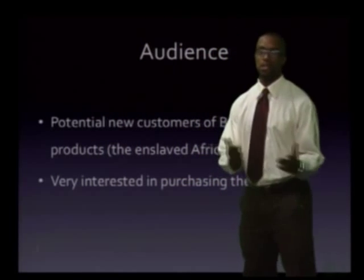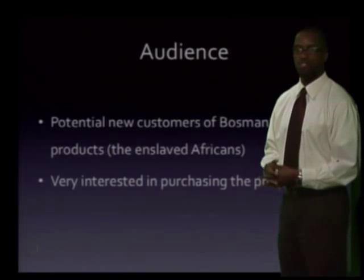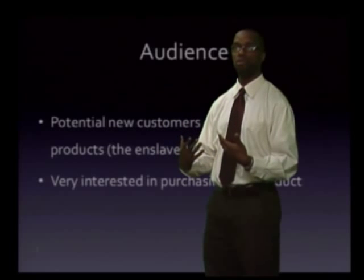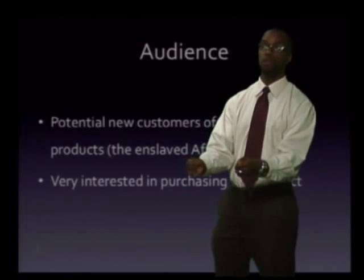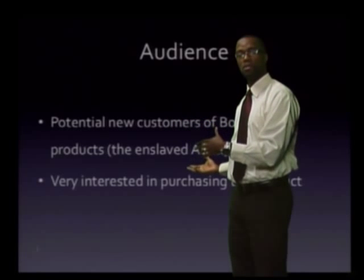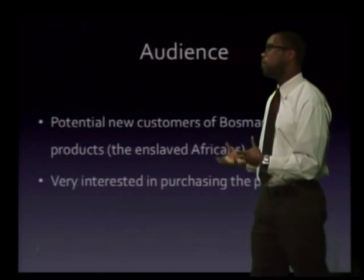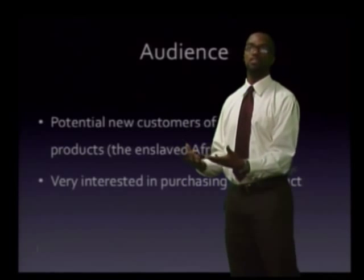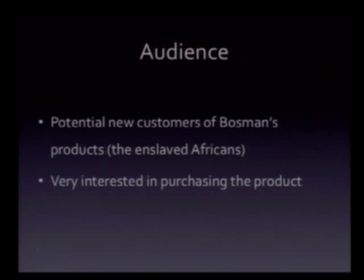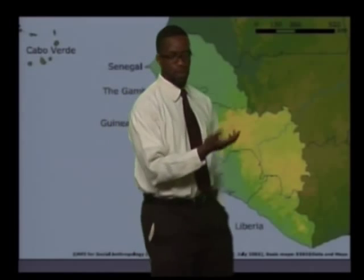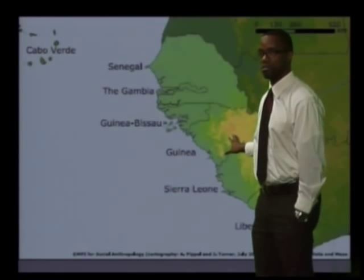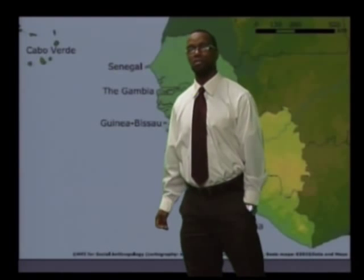Audience — the audience could be potential new customers, new customers of Bosman as a sea captain. One of his interests would be: I have these enslaved people on board, I need to sell them at my destination. Listen to how well we treat these enslaved people — maybe you want to buy from us. So people may become very interested in the products of Bosman's business through his writing. There's a lot of self-interest there. We're talking about Guinea — this area on the Western coast of Africa.